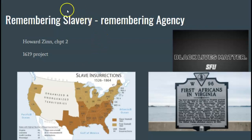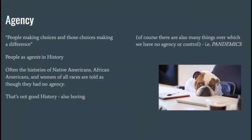When we're talking about the history of slavery — this stuff is difficult. It's stuff that Americans are grappling with right now, Americans of all races. One thing I want you to remember is the concept of agency. One of my professors in grad school was really famous for saying that history is people making choices, and those choices making a difference. Agency is the word historians use to remind ourselves that people have been agents in history — people make choices, and those choices make a difference.